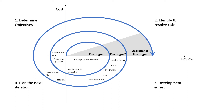The fourth phase is the plan-the-next-iteration phase. This is the evaluation phase in which stakeholder review and feedback occurs, and the next iteration, if at all needed, is planned.